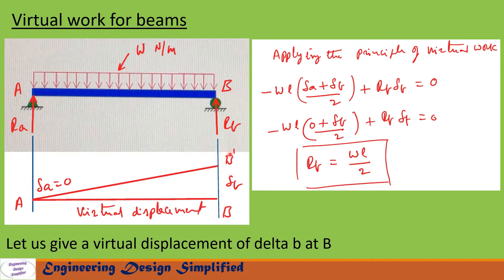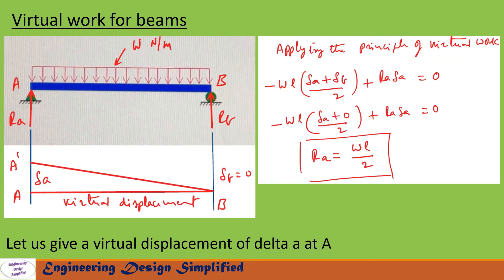In this equation, delta_A equals zero. After substituting delta_A equal to zero and simplifying, we get reaction at B: R_B equals wL by 2.